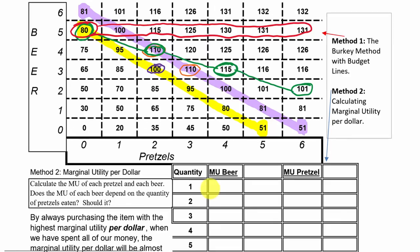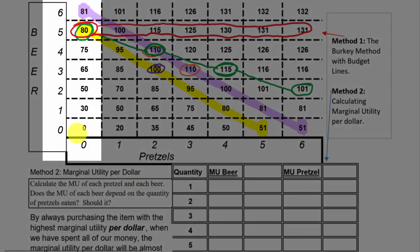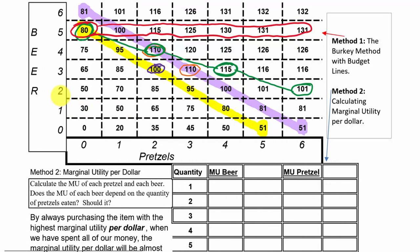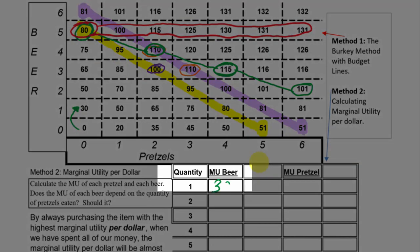Let's tackle beer first. We pick a column - let's pick the column when we have zero pretzels. When we have no beer, we have no utility from beer. When we drink the first beer, that gives us 30 utility. After the second beer, we have 50 total utility from drinking beer. We want to find the marginal - the additional change in utility as we consume more beer. The marginal utility of the first beer: since that takes us from zero up to 30 happiness, the additional utility is 30.